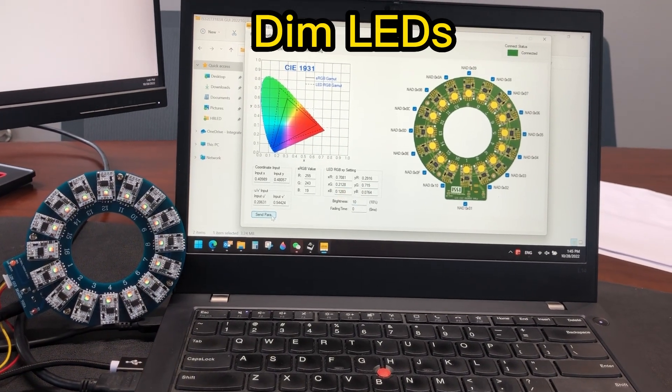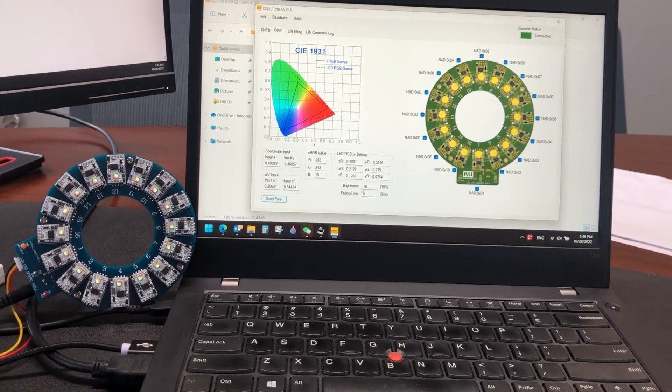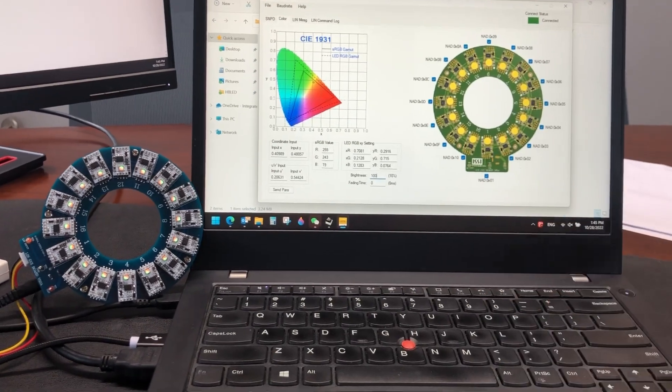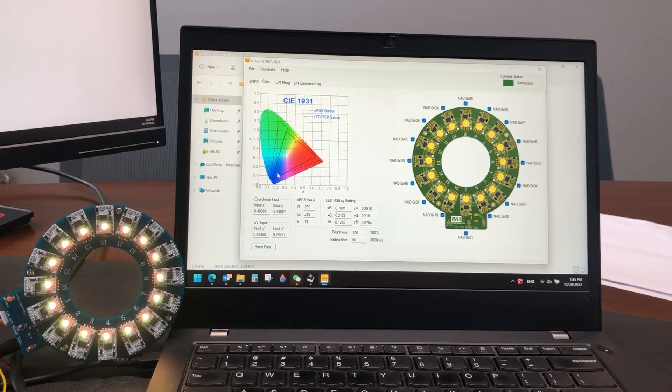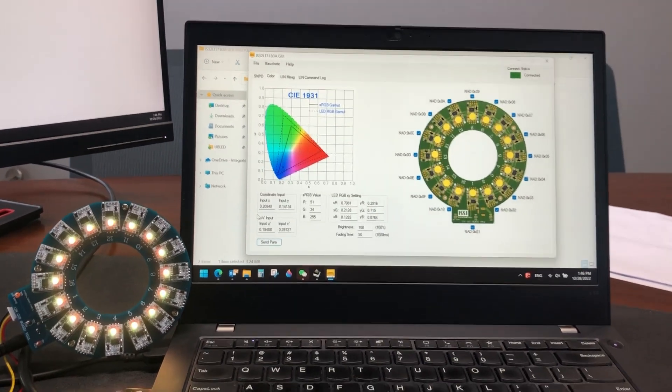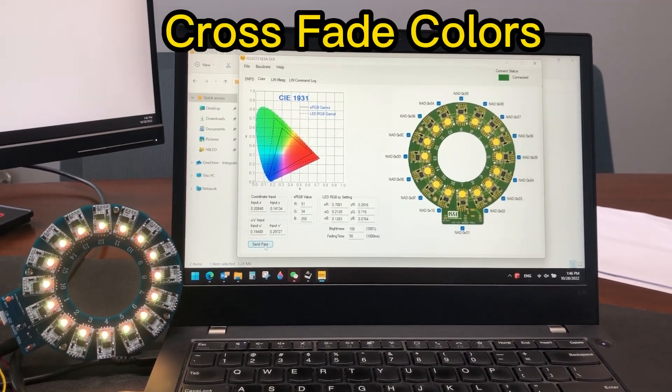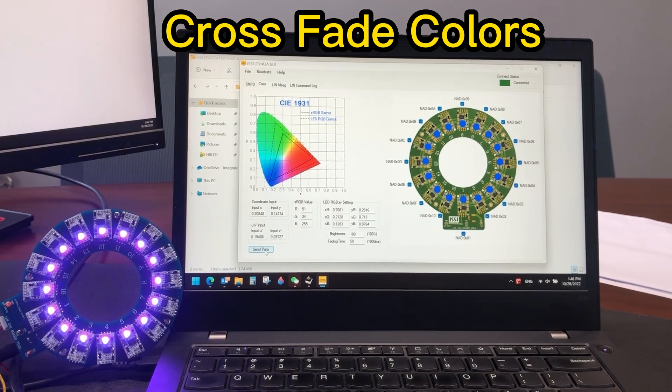The other programmable parameter is LED dimming brightness level. Color crossfade and duration is a built-in function of the IS32LT3183A driver.